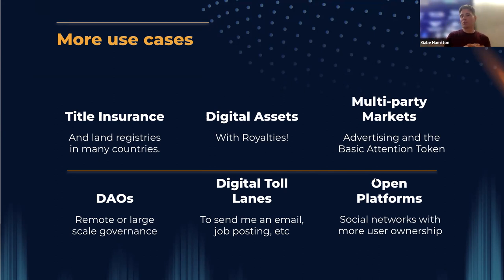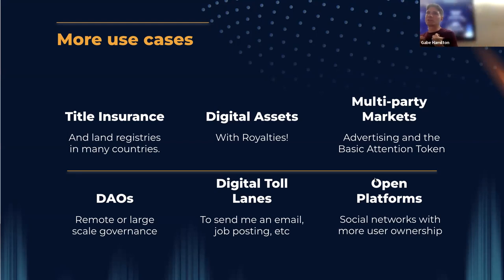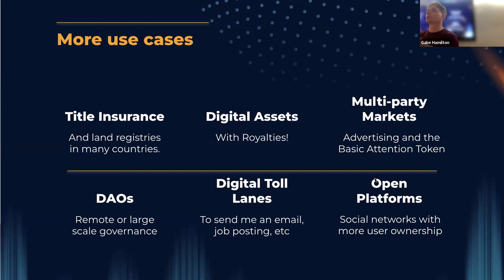The Basic Attention Token is an example of a multi-party market — you've got people who are being advertised to, publishers, and ad networks. Those kinds of things are hard to put together. But when you have a system where there are fractional incentives that accrue to people, it makes it a little bit easier to build out things where a lot of people need to come to the table.